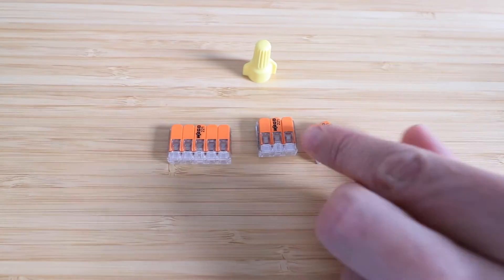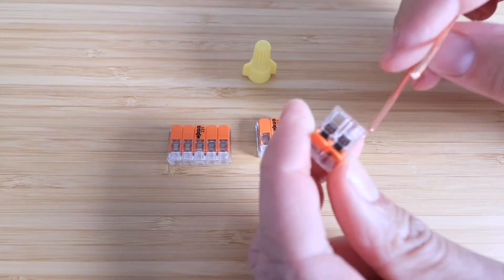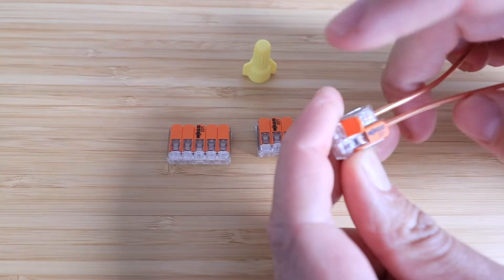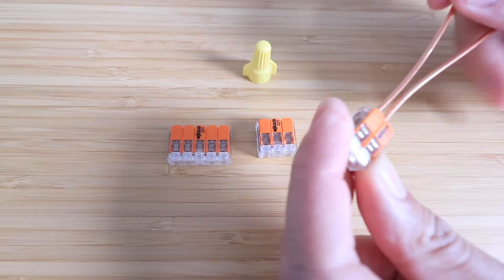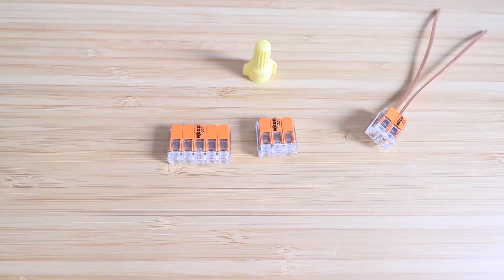And the main reason that I like the Wago is all you have to do to insert wires and connect them is you open up those levers, you insert your wire right there, insert your other wire right there, and now you're good to go. These are completely connected, very easy to install.